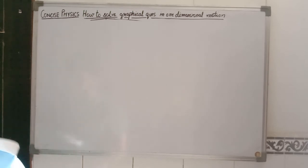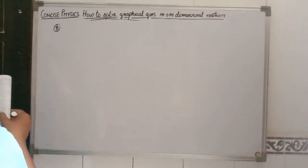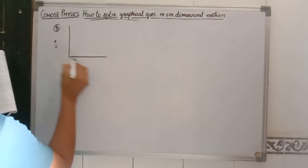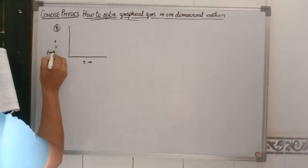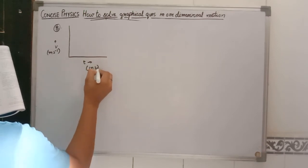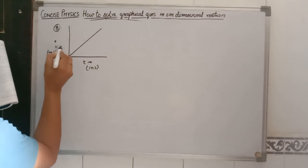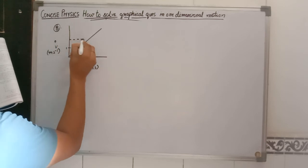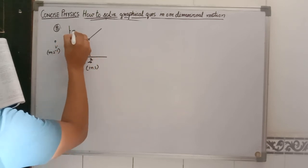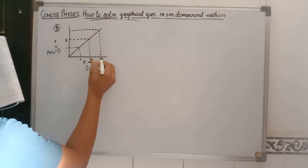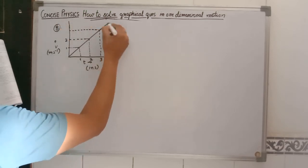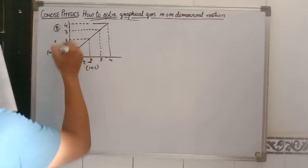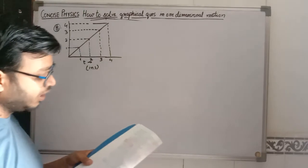Now coming to question number 8. In this question, two graphs are involved. The first graph given is a velocity-time graph, with velocity in meters per second on the y-axis and time in seconds on the x-axis. The graph is a straight line passing through the origin, and at 1 second velocity is 1 m/s, at 2 seconds it is 2 m/s, at 3 seconds it is 3 m/s, and at 4 seconds it is 4 m/s. From this velocity-time graph, we have to draw the displacement-time graph.